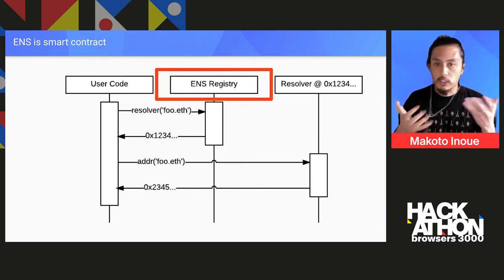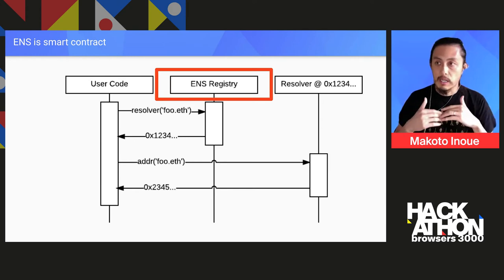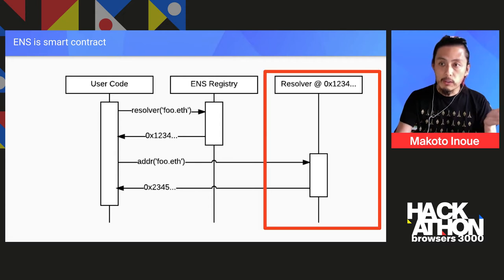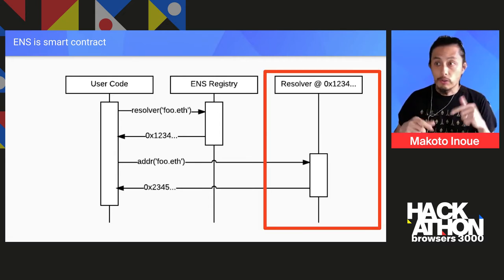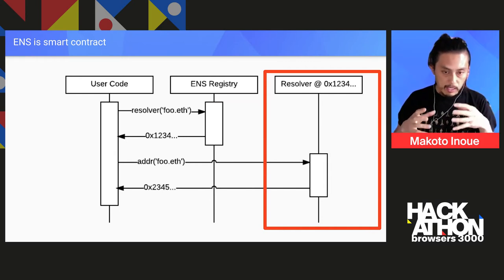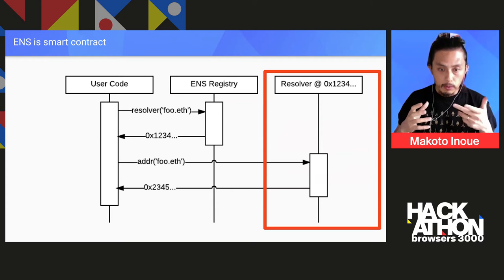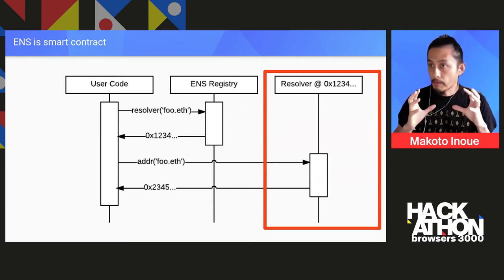It's just a key-value dictionary. We have something called the ENS registry, where you ask for the address of, for example, foo.eth. Rather than just returning the crypto address straight, we return something called a resolver, which is in charge of actually storing the record. In the first example, it returned the same address, but this resolver is very extensible — anyone can write their own resolver and add support. It's really extensible.